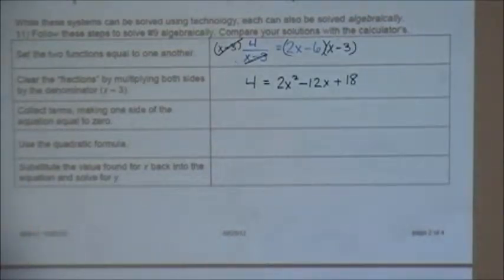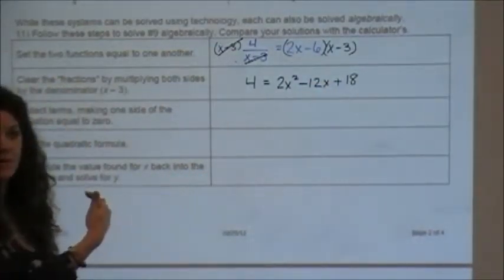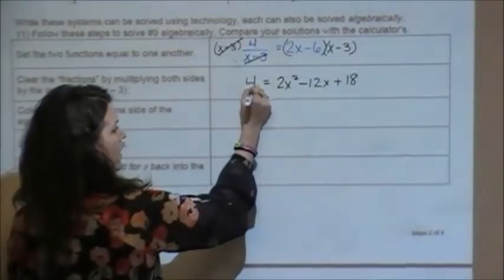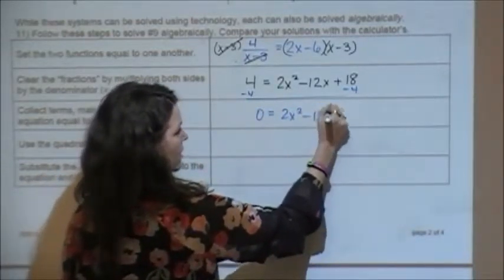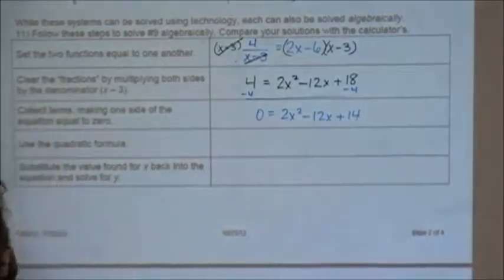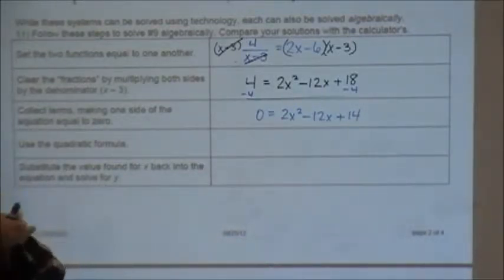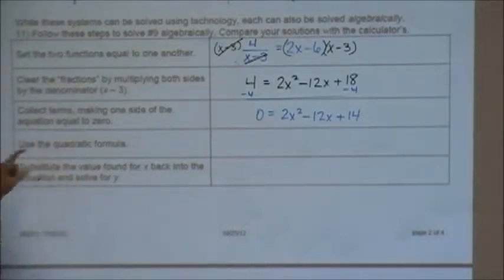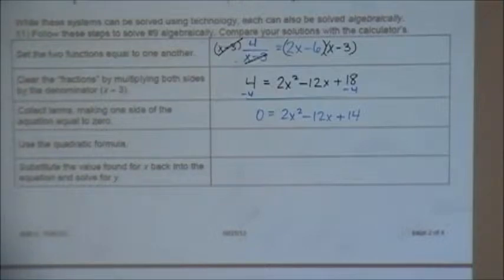Now at this point it's just solving an equation. It just so happens that this equation is quadratic, and in order to solve a quadratic equation we have to move everything to one side and set it equal to zero. So I'm going to subtract four and I'll have zero equals 2x squared minus 12x plus 14. Now here it does have a GCF of 2, and I could factor out the GCF and try to factor it, but they gave us a clue on this one that we have to use the quadratic formula because this one doesn't factor.